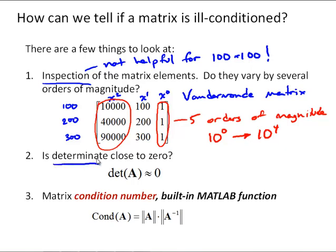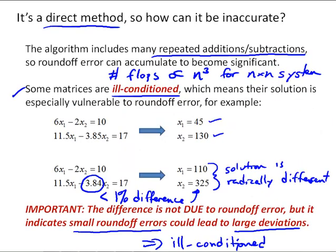One is to look at the determinant. If the determinant is close to zero, that indicates that the matrix is close to singular. And again, that is a case where we might have roundoff error problems. And that would be in this example over here. This case, the determinant is close to zero for this example from the previous slide.